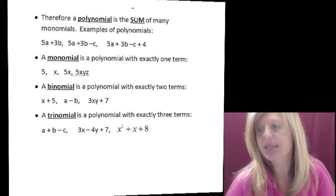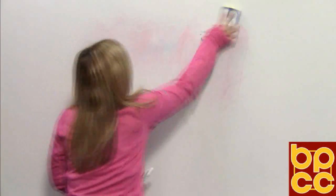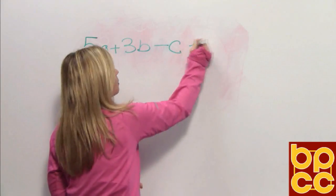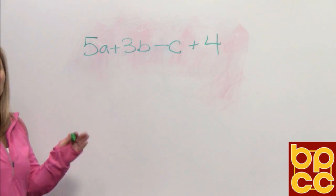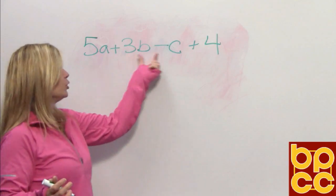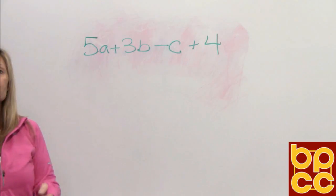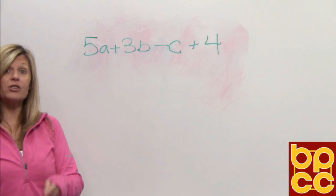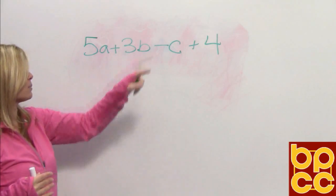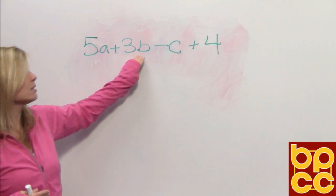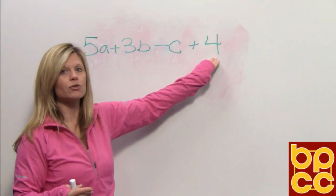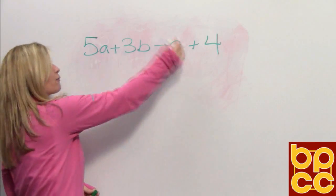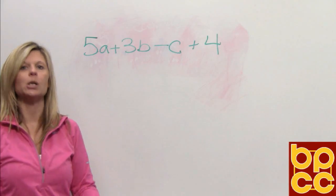Let's look at another example. If I write 5A + 3B - C + 4, you would notice that there are four terms: one, two, three, four. The terms are separated by addition and subtraction symbols. Think of it as this: every term is a thought, so there are four thoughts up here. Five apples plus three bananas minus a coconut plus four dollars. If you could visualize four different things, you have four different monomials. Because there are four monomials up here, we call this a polynomial—many monomials.